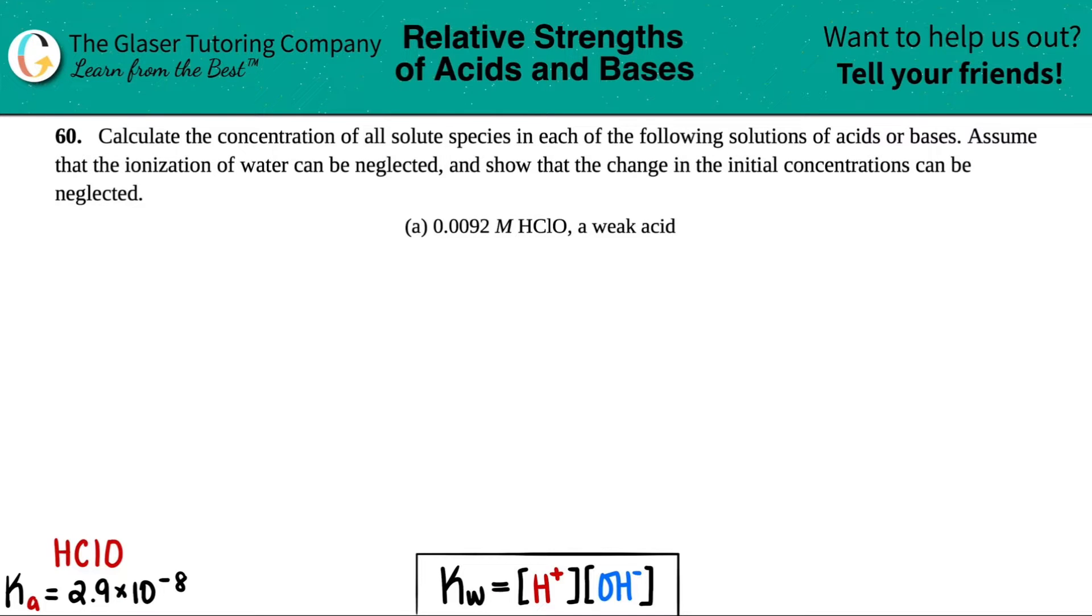Number 60. Calculate the concentration of all solute species in each of the following solutions of acids or bases. Assume that the ionization of water can be neglected and show that the change in the initial concentrations can be neglected. And then we have letter A, 0.0092 molarity HClO, which is a weak acid.